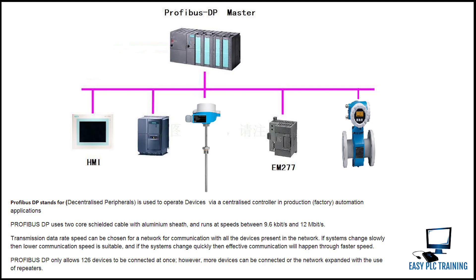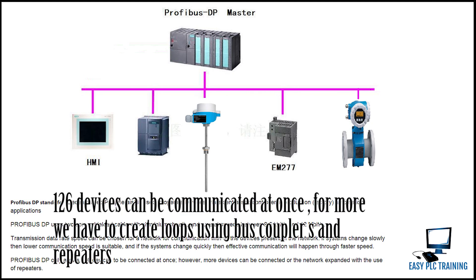If systems change slowly, then a lower communication speed is suitable. If systems change quickly, then effective communication will happen through faster speed. PROFIBUS DP only allows 126 devices to be connected at once; however, more devices can be connected or the network expanded with the use of repeaters.